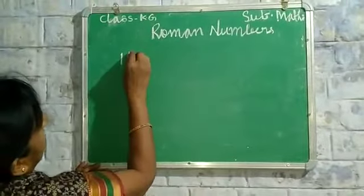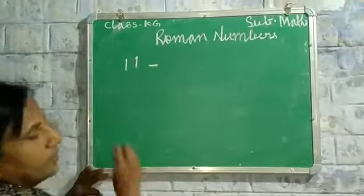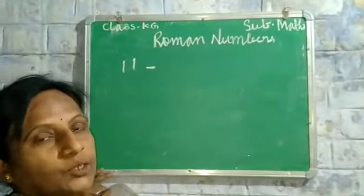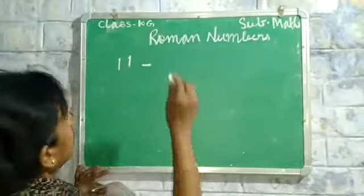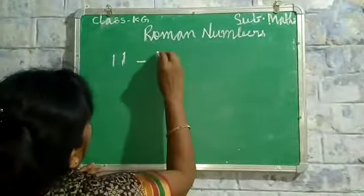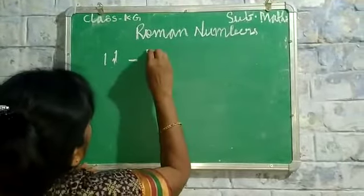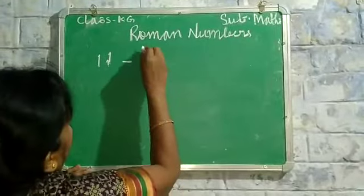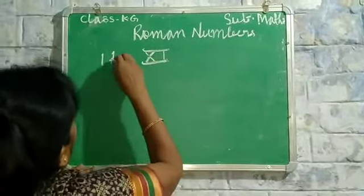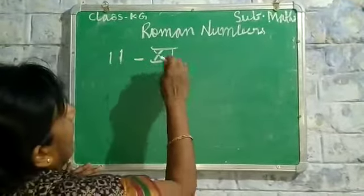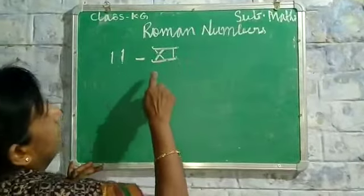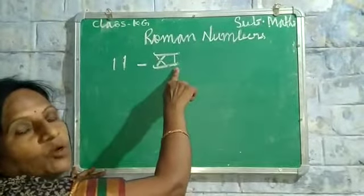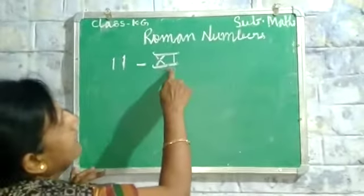Here is 11 in Roman numbers. I will teach you the formula. Here is 11 — X and I. Here is 10 and I, which makes 11. What is this Roman number? X and I.